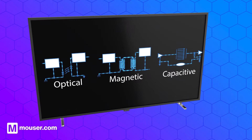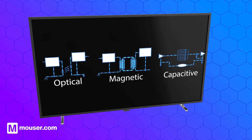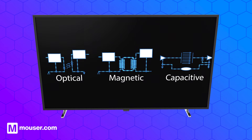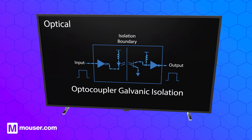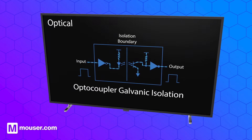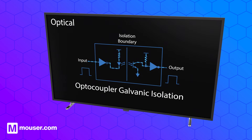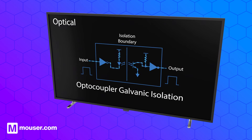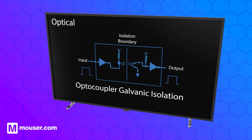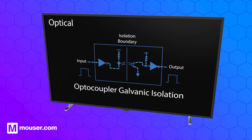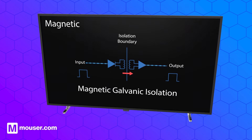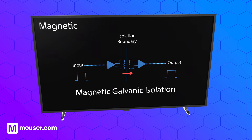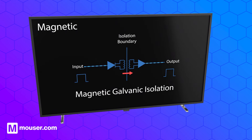There are three basic technologies used for digital isolation: optical, magnetic, and capacitive. In optical isolation, an LED passes data across the isolation barrier in the form of light pulses. These are received by a phototransistor which converts the pulses into electrical signals. In magnetic isolation, a magnetic field is used to pass data and power across the isolation barrier, similar to a transformer.